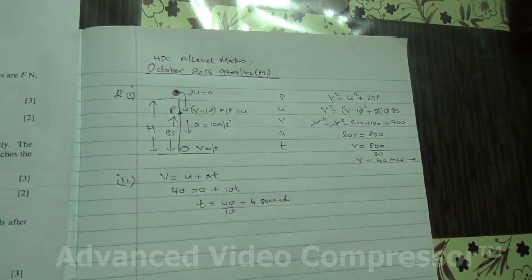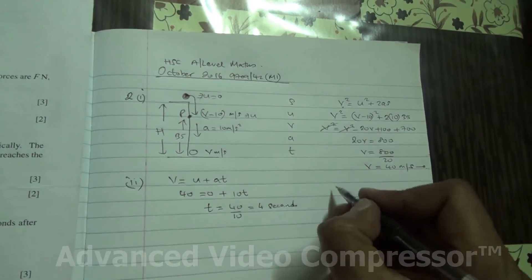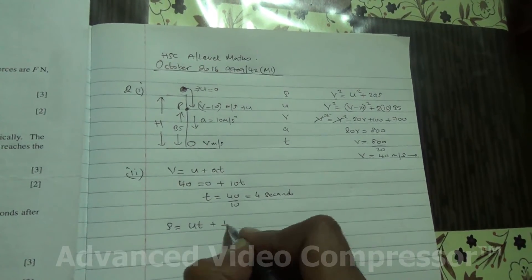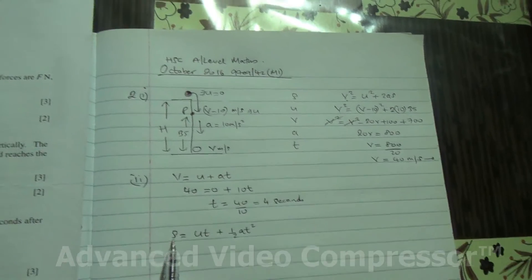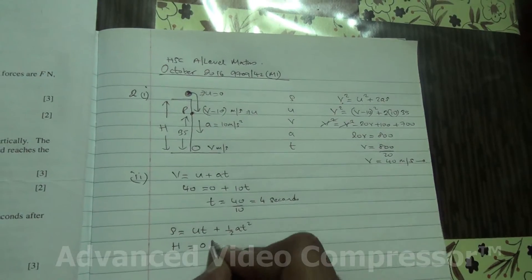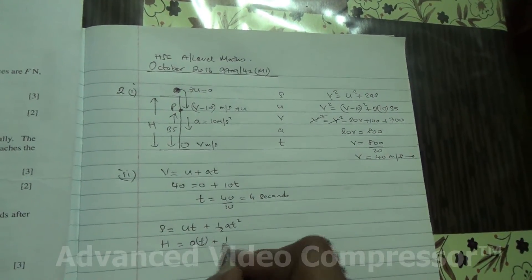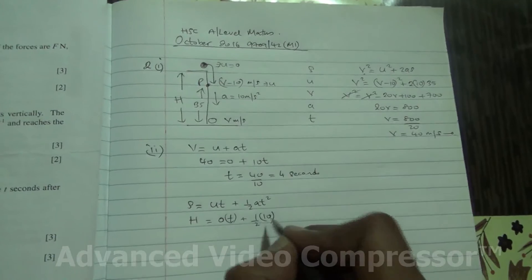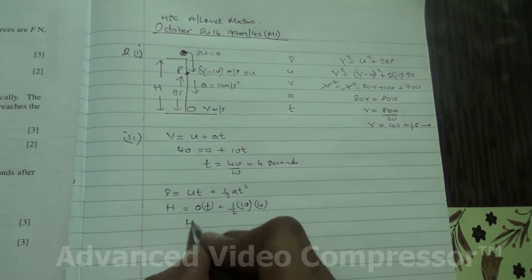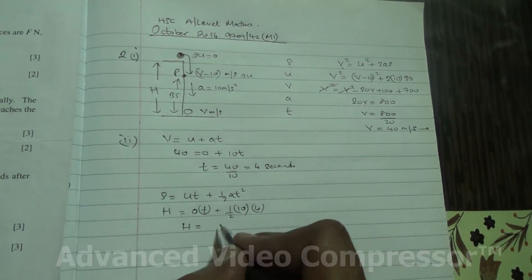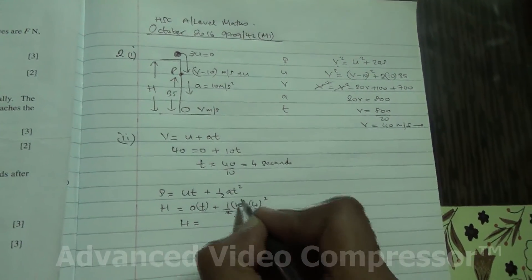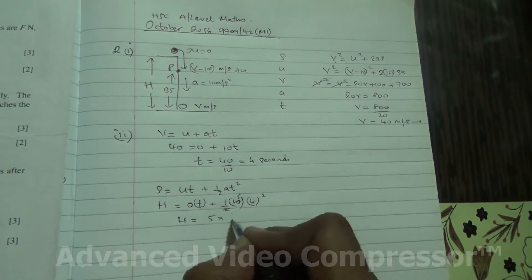Now, the other equation we can use from the SUVAT is, s is equal to ut plus half at squared. S is h. So, I am going to say h is equal to ut, and therefore 0 times t plus half at squared. A is 10 times t to the squared, and t has been found to be 4. So, therefore, h is going to be equal to t to the squared, so 4 squared. So, this goes out, it's going to be 5, 5 times 16.